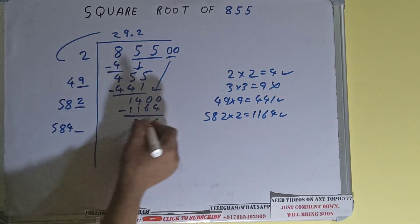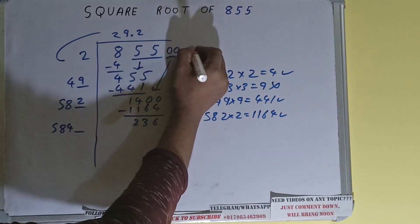And one digit extra, and this number we need to make it big, so bring the next pair of zeros down and it will become 23600.